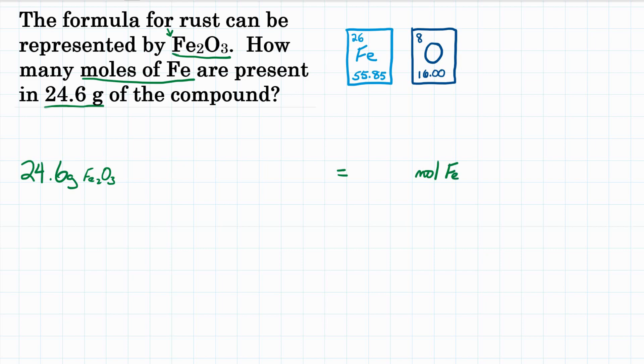Our first step here is to turn grams of Fe2O3 into just grams of Fe. In other words, we're going to need the percent composition of iron in iron oxide, so we have to do a separate calculation here.